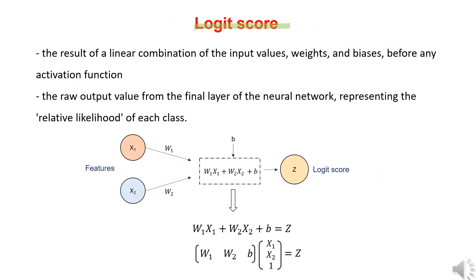Let's first take a look at logit score. The next diagram shows part of the structure of a perceptron. When two values, x1 and x2, are input, they are each multiplied by their corresponding weights, omega 1 and omega 2, and then the bias B is added. In this way, the raw output from the final layer of the artificial neural network, before the activation function is applied, is called the logit score.